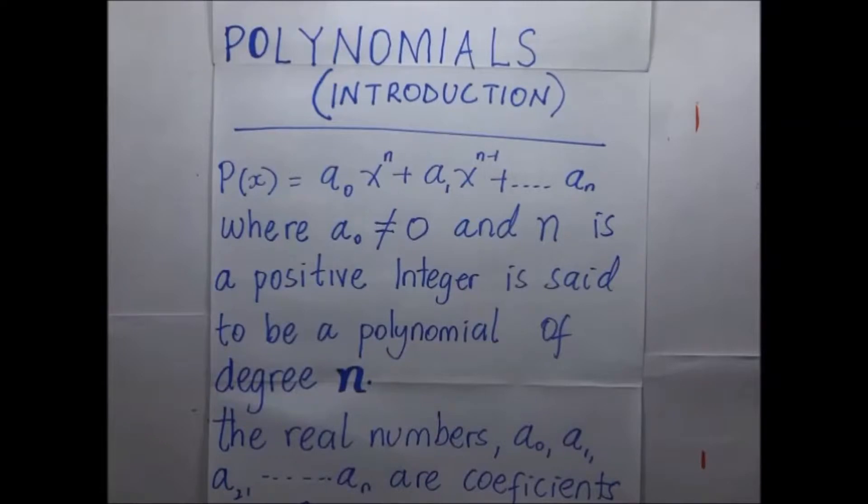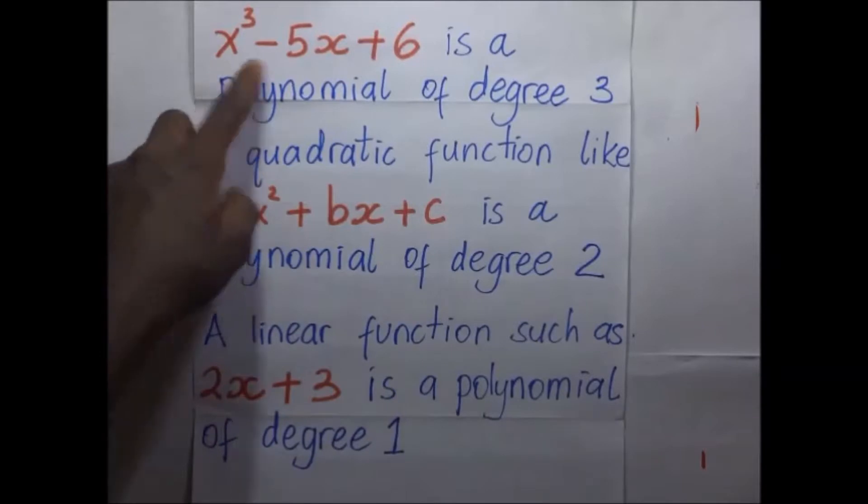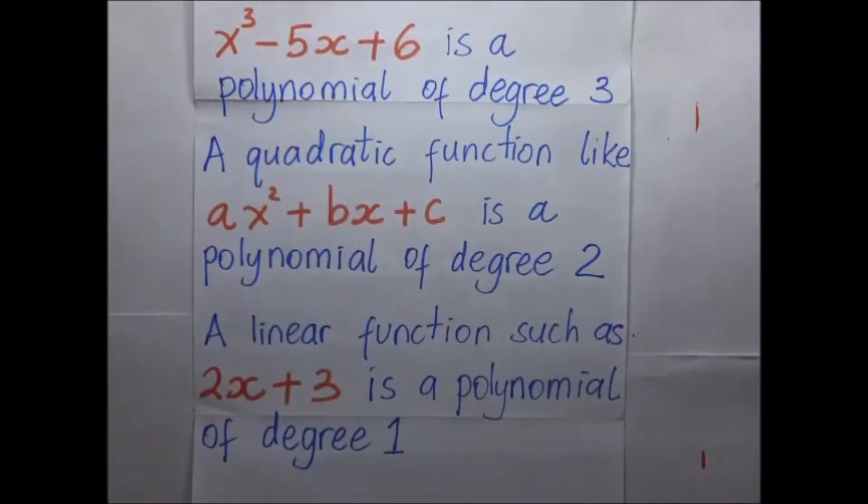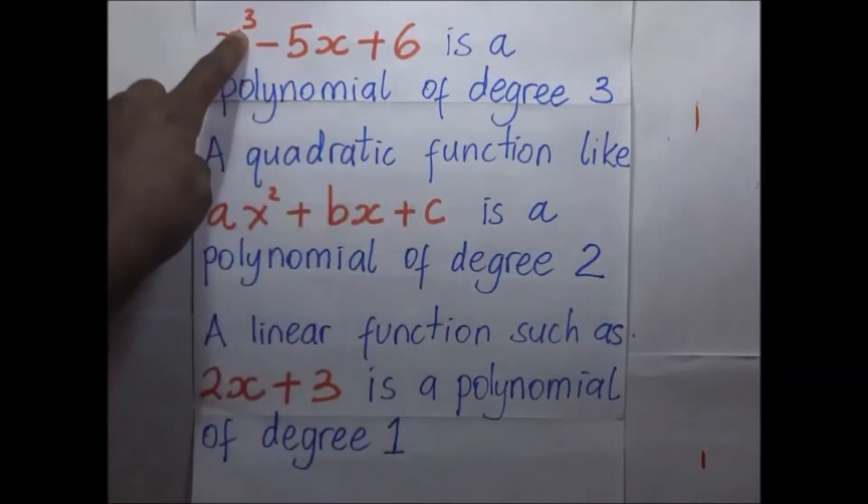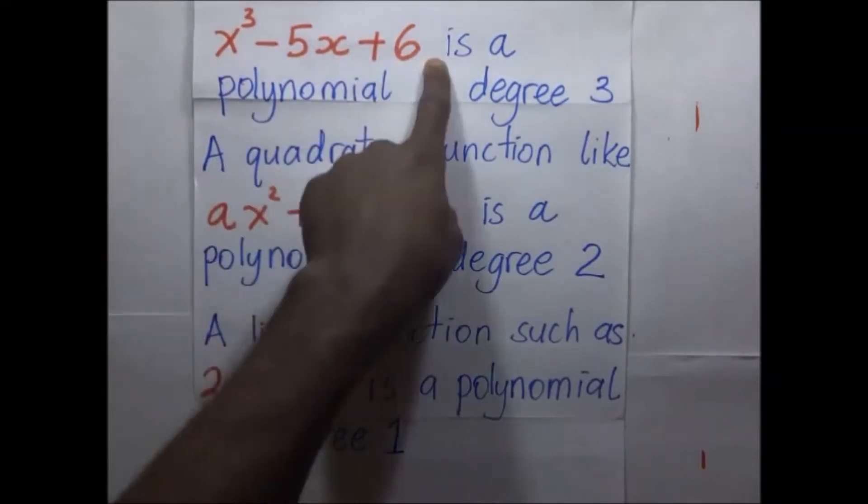In this series that I introduce today, we shall be dealing with different kinds of polynomials with different forms. Let me give you a few examples. For example, x³ - 5x + 6 is a polynomial to the degree 3. We consider the highest degree and we call it a polynomial with the highest degree, which is degree 3.